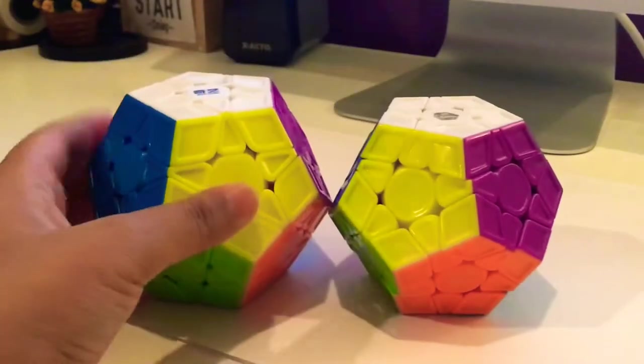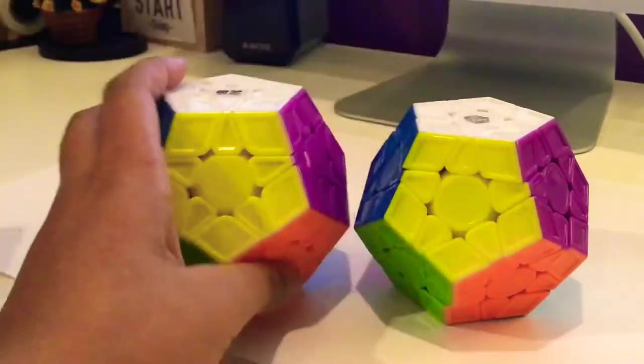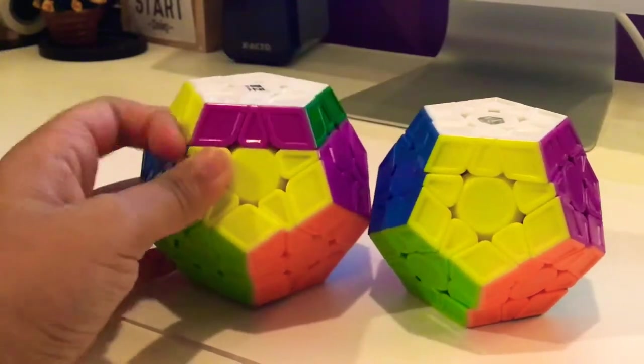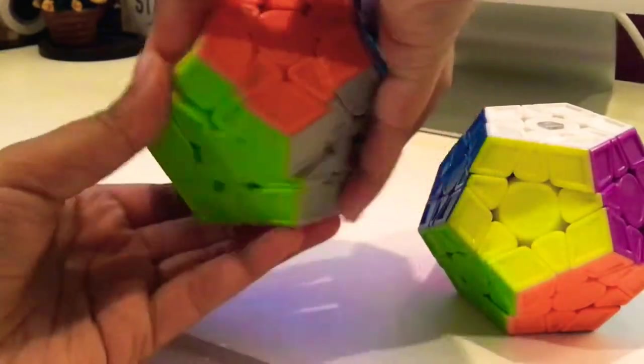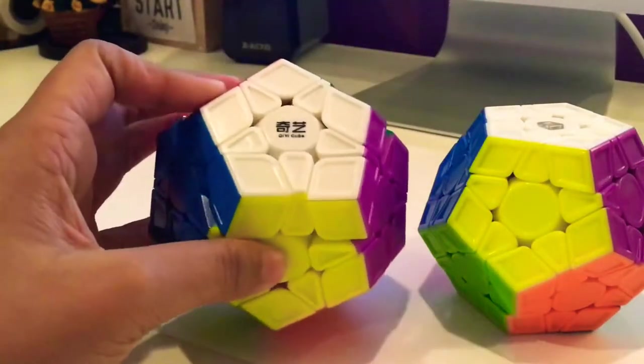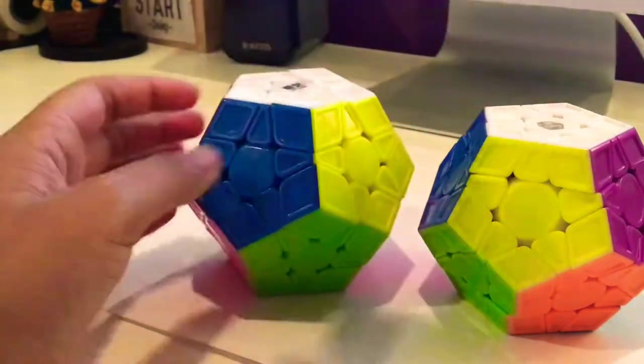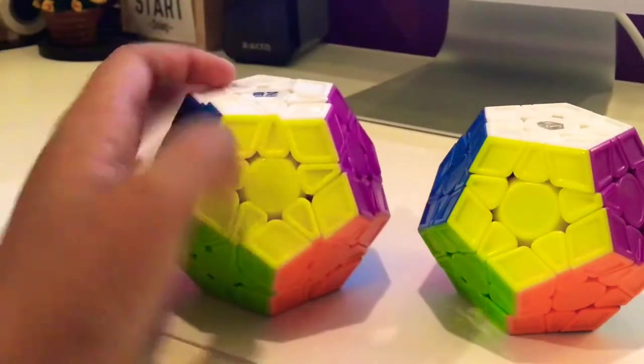And this is my first megaminx. After looking at this, it's really big, and the turning is really nice for $7.95. But it's just a little bit too big for my hands. This is a QiYi QiHeng S megaminx. The color shades are also really nice and it has a similar design where it has sculpted ridges.